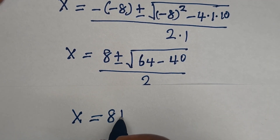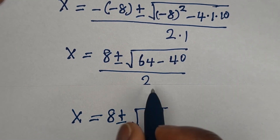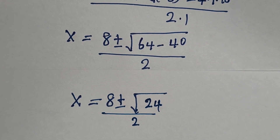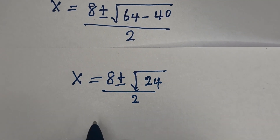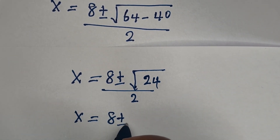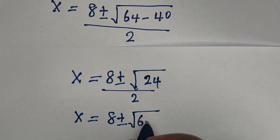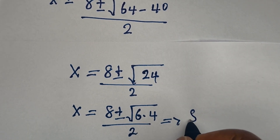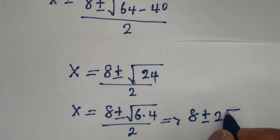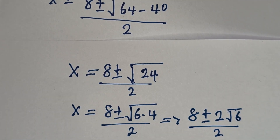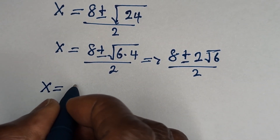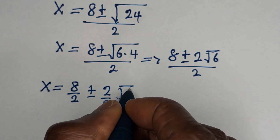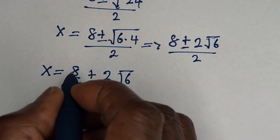So x is equal to 8 plus or minus square root of 24. This can be written as square root of 4 times 6, so x equals 8 plus or minus 2 root 6, all over 2. This simplifies to x equals 8 over 2 plus or minus 2 over 2 times root 6, and the 2s cancel.